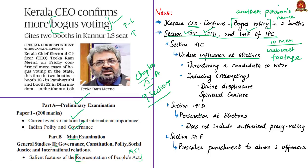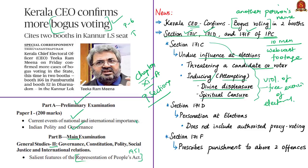The actions covered under section 171C also include threatening any candidate or voter, or inducing a candidate or voter to believe that the person in whom he is interested will become an object of divine displeasure or spiritual censure. For example, telling a voter that if they vote for a certain person, they will not be allowed to take part in temple rituals, or that the candidate is acting against God. Even these actions constitute a violation of the free exercise of electoral rights. The same offenses are also covered under section 123 of the Representation of the People Act 1951 under corrupt practices.